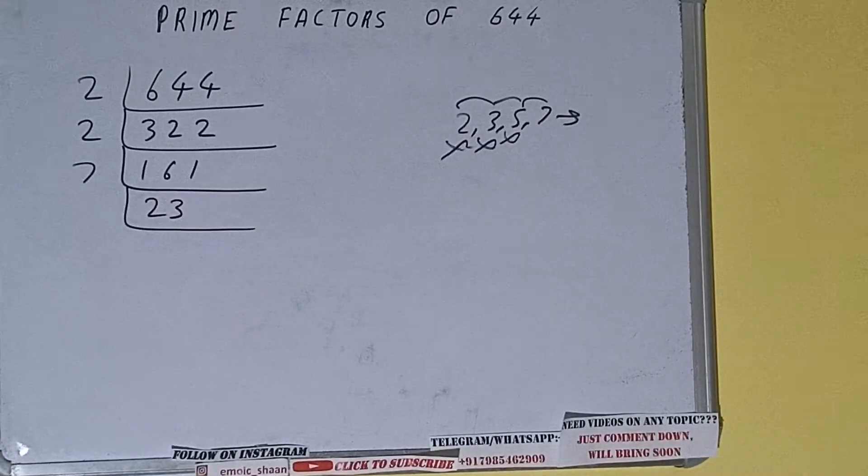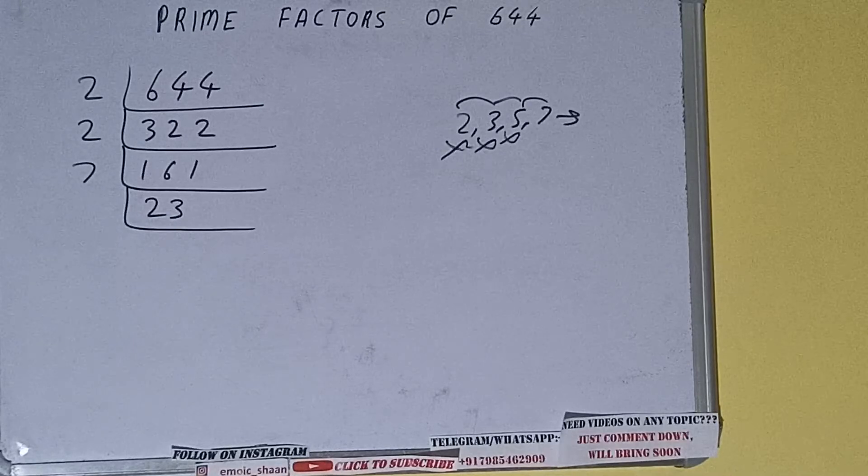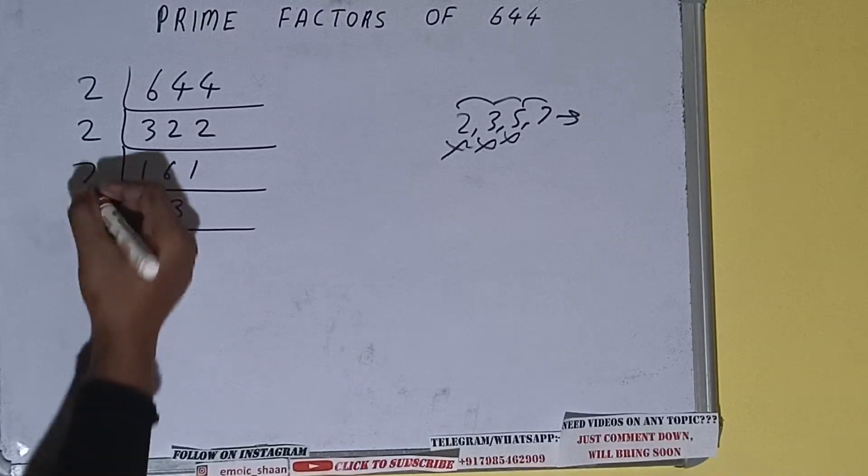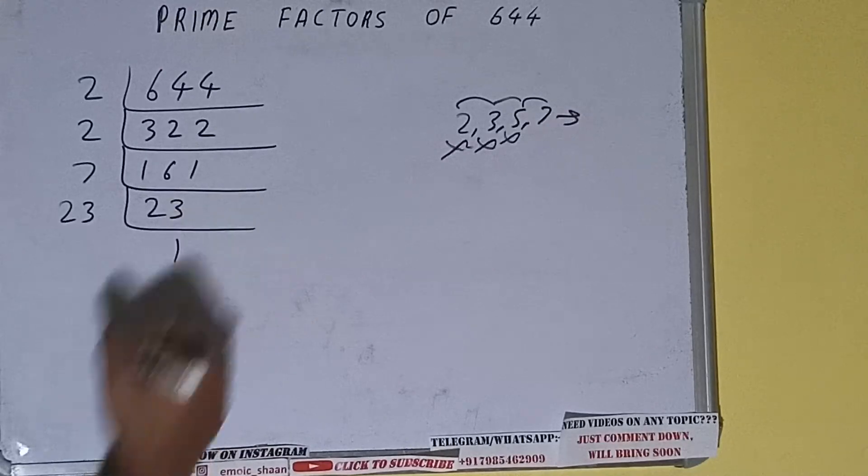And 23 is further not divisible by 7, and 23 is also a prime number, so it is only divisible by itself, that is 23. And once we do so, we'll be getting 1.